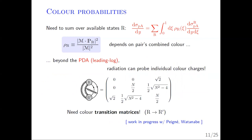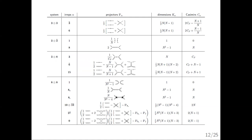That's the leading logarithm — there's one large log. When you want to go beyond that log, you find that the radiation can start to probe the two individual partons and can get transitions between color subspaces. That's something we're working on; it involves projecting into different subspaces, so it's a very fun calculation.